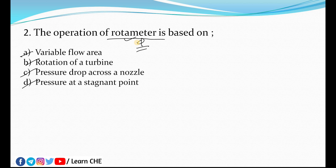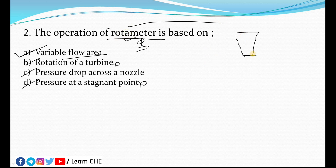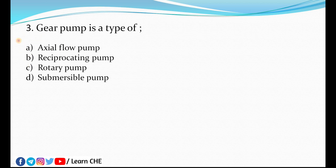Please let me know in the comments box what is the working of a pitot tube. The rotation of a turbine is not the answer, and pressure drop across a nozzle and pressure at a stagnant point are also not the answers. The right answer is variable flow area, because the structure of a rotameter is tapered and the area of the float changes. That's why variable flow area is the right answer.